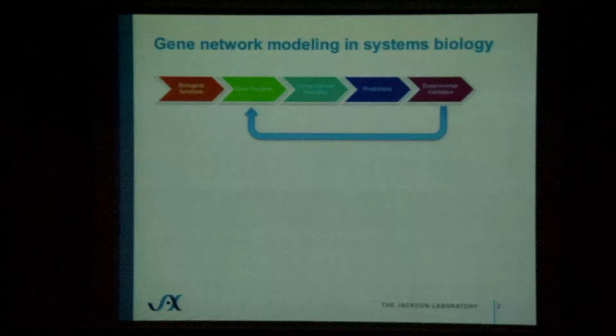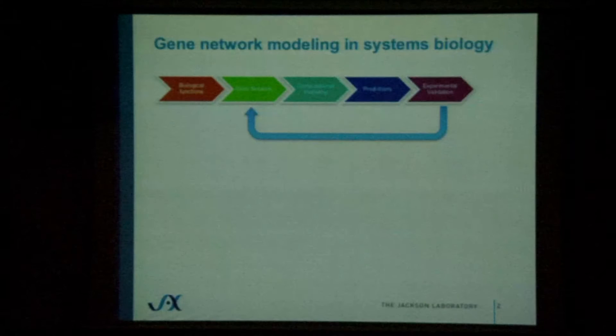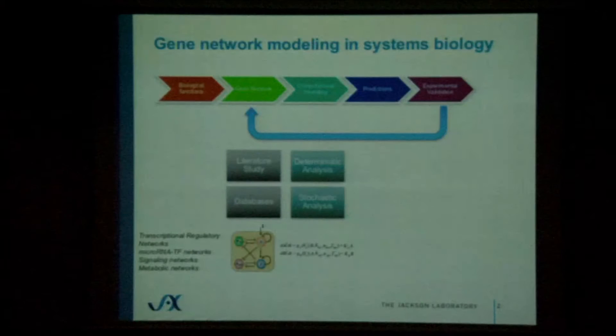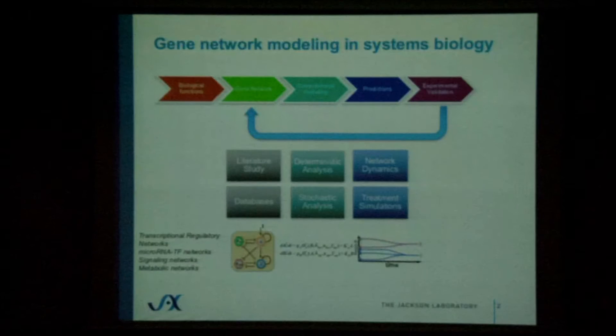They use a bottom-up approach to study the dynamic behavior of gene network circuit motifs. The pipeline starts from the biological functions of interest, then constructs gene networks using literature studies or databases such as ingenuity pathway analysis. They are particularly interested in transcriptional regulatory networks, using deterministic or stochastic analysis to predict gene expression dynamics, validated by experimental data. The quality of experimental data is very essential.